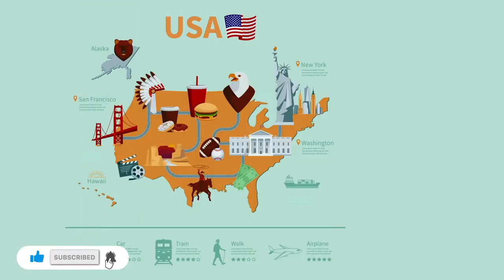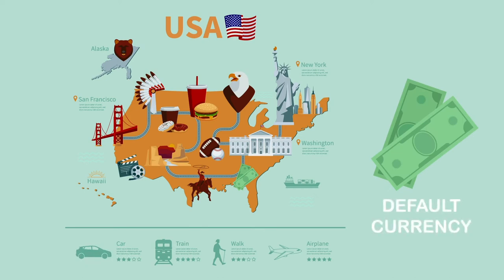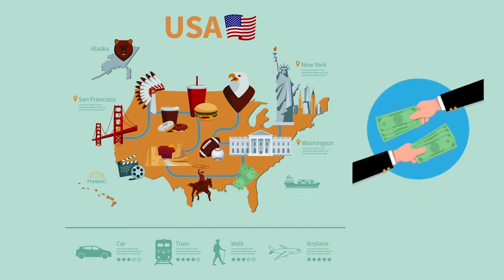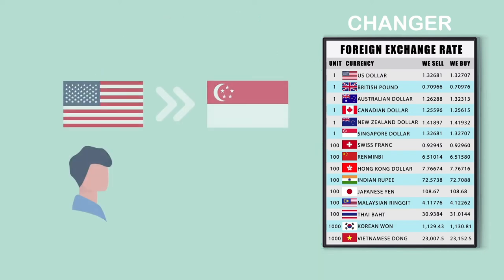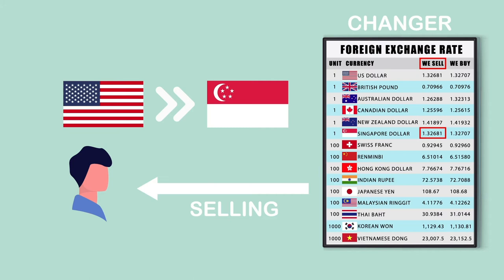Number two, scenario one: when in the US, the trading currency is the US dollar — it is the default currency used to buy things in the country. So when exchanging money from US dollars to Singapore dollars, we are buying the Singapore dollars as a product using the home currency. While standing outside a money changer or bank — let's call them 'changers' for short — and looking at the display board of currency rates, the rate for exchanging to Singapore dollars will be displayed under 'we sell.' The word 'we' refers to the changer, and they will sell Singapore dollars to us at the specified selling rate.